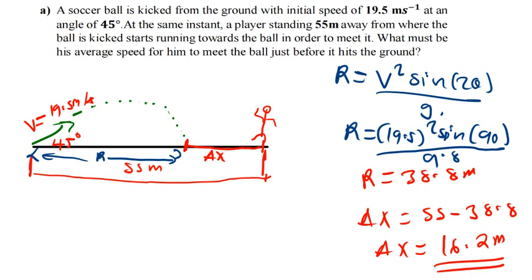Since I've established that the time must be the same for both the ball and the player, I need a formula for the time of flight of the projectile. I'll then equate the times and find the velocity. The average speed formula is: speed = delta-X / time. But I need the time, so I'll get it from the trajectory. Since the trajectory time and the player's travel time must be equal, I'll use the projectile time formula.